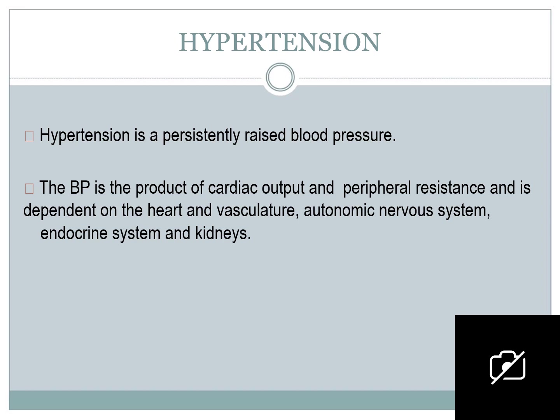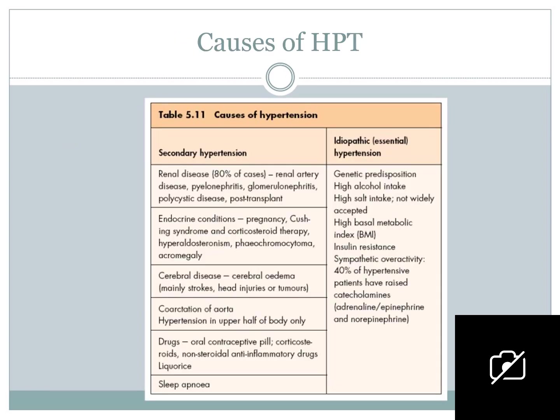Hypertension is a persistently raised blood pressure. BP is the product of cardiac output and peripheral resistance, dependent on the heart, vasculature, autonomic nervous system, endocrine system, and kidneys. Causes of hypertension include secondary hypertension — renal disease (80% of cases), renal artery disease, pyelonephritis, glomerulonephritis, polycystic disease — as well as endocrine conditions, pregnancy, Cushing's syndrome, corticosteroid therapy, and hyperaldosteronism.